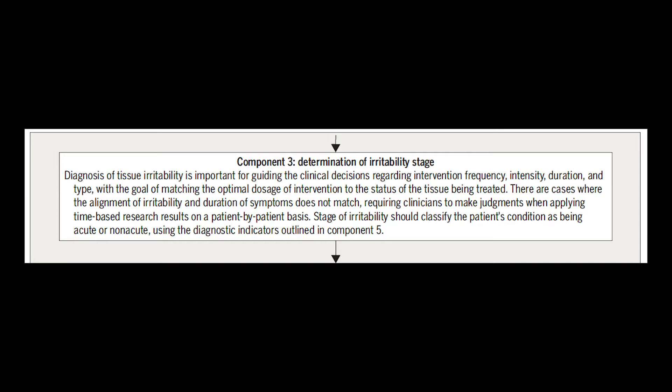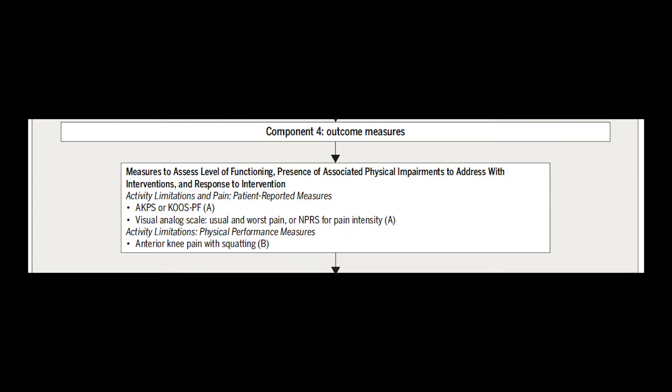Continuing down the chart, they suggest looking at the stage of acuity — whether it's super irritable, calming down, more subacute, or a later stage. Then we look at functional outcome measures to track progress.